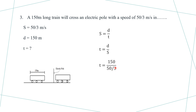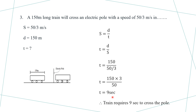Time T equals 150 divided by 50 by 3, which equals 150 multiplied by 3 divided by 50. Cancelling zeros, we get T equals 150 into 3 divided by 50 equals 9. Therefore, the train requires 9 seconds to cross the pole.